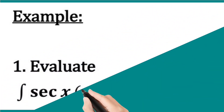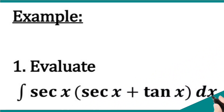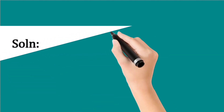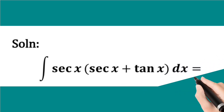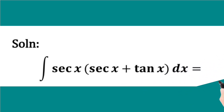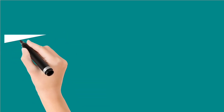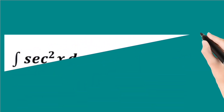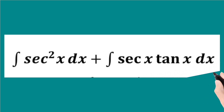Example 1: Evaluate the integral of sec x into (sec x plus tan x) dx. We solve this by first opening up the brackets. The integral of sec x(sec x + tan x) dx is equal to the integral of sec square x dx plus the integral of sec x tan x dx.